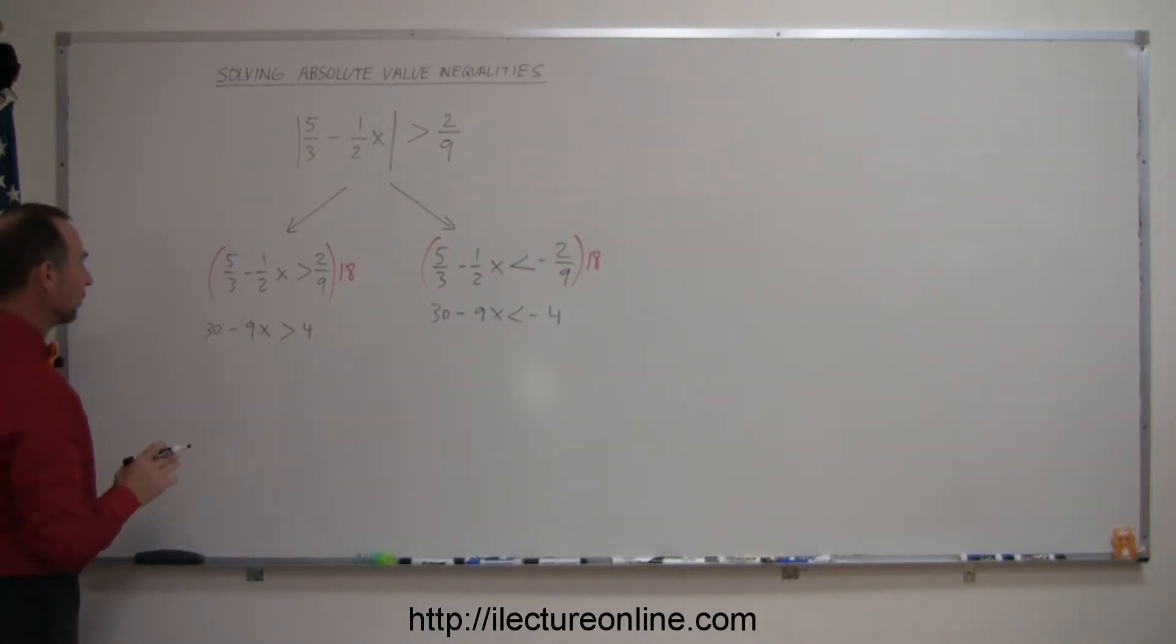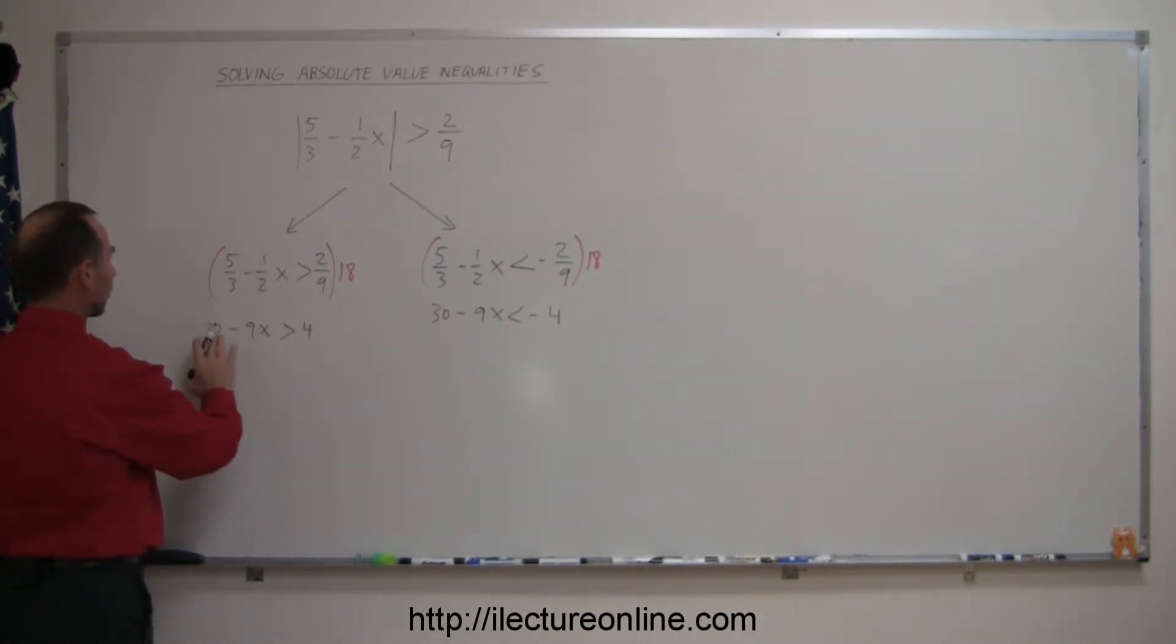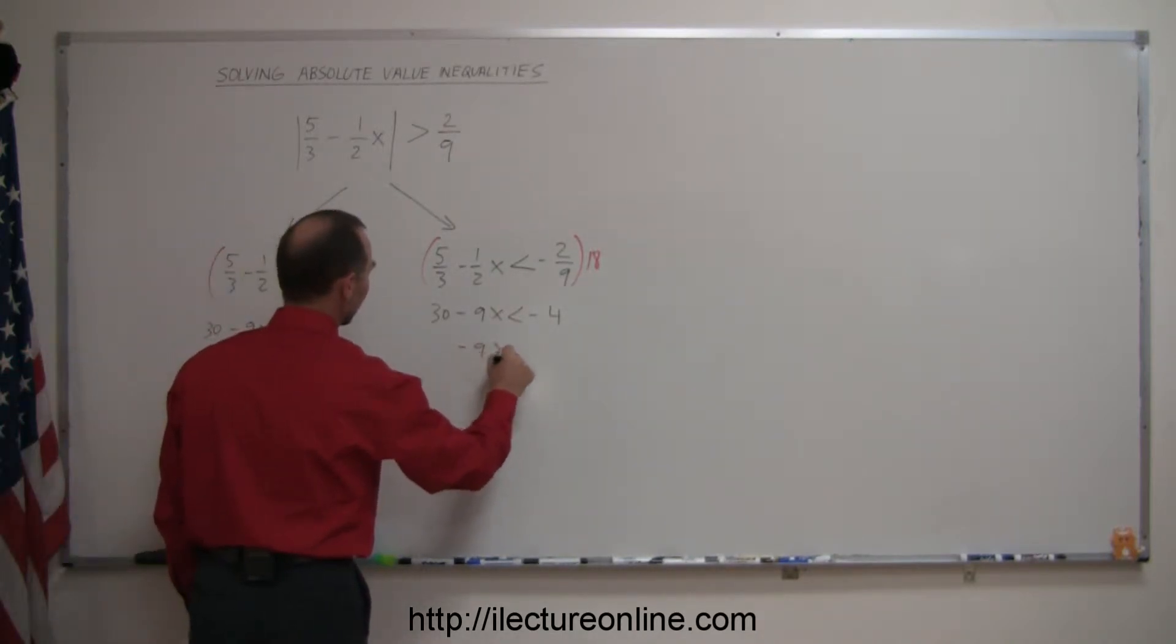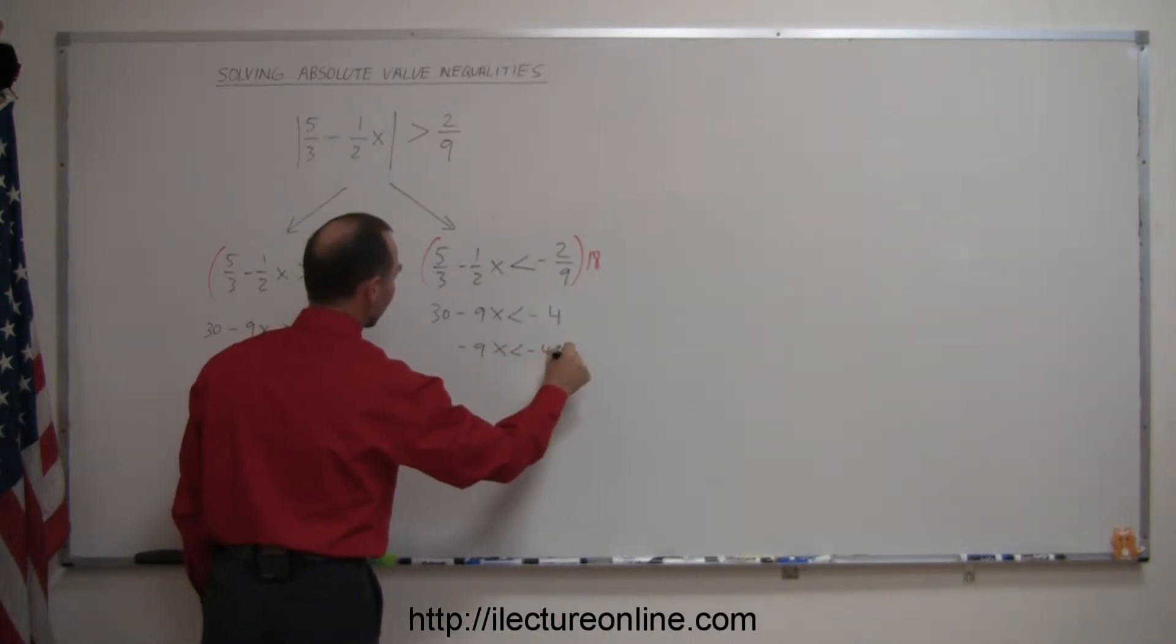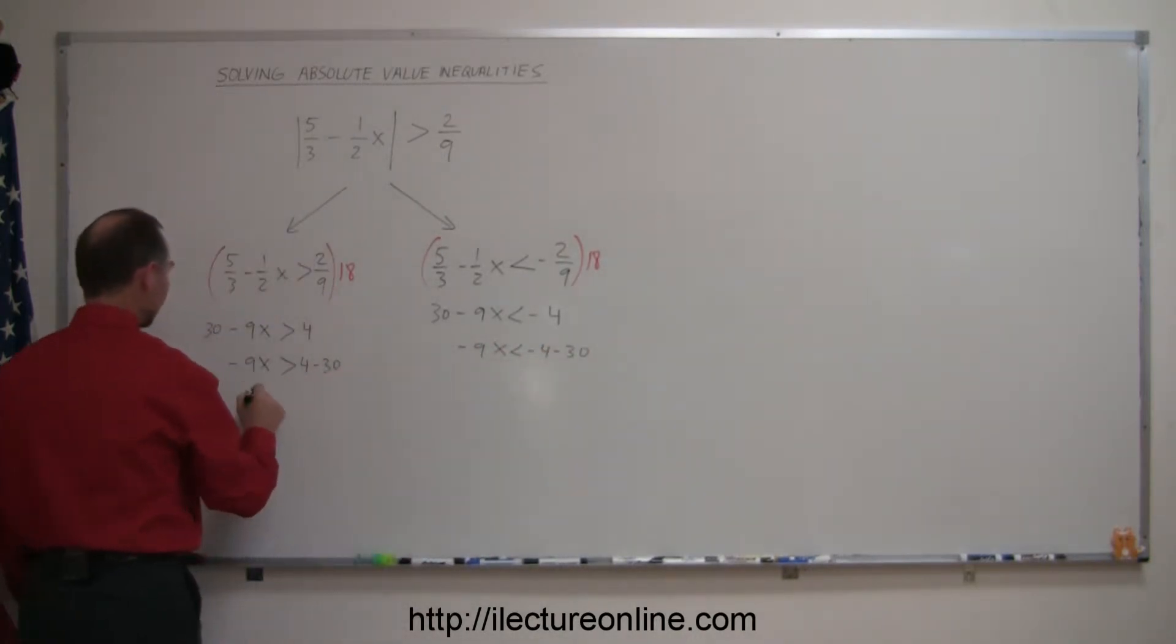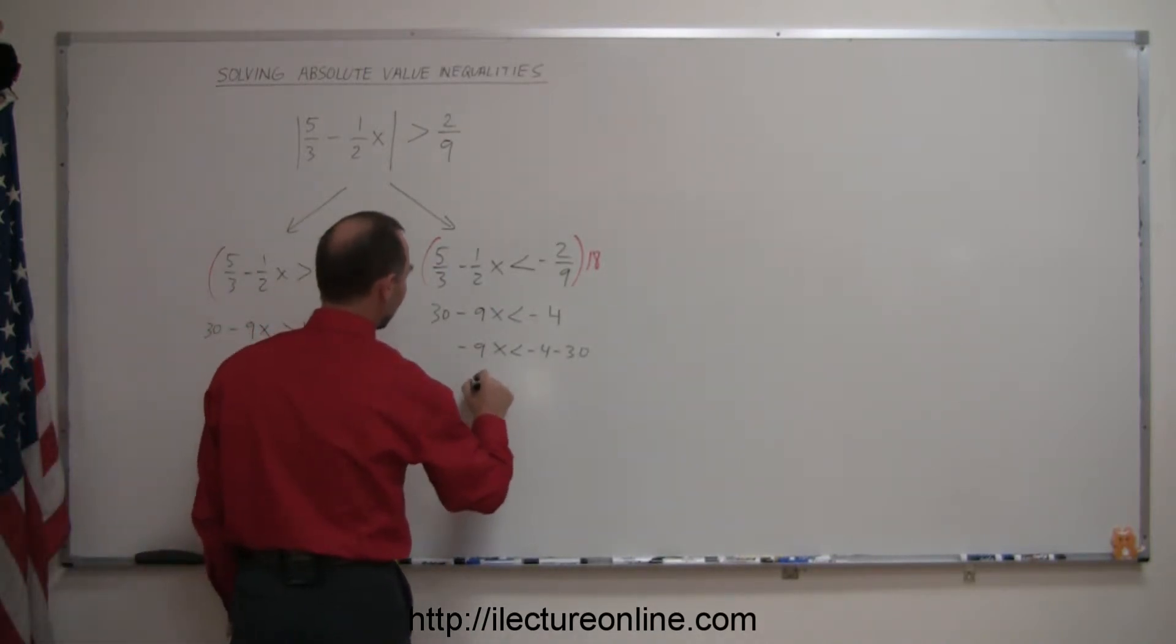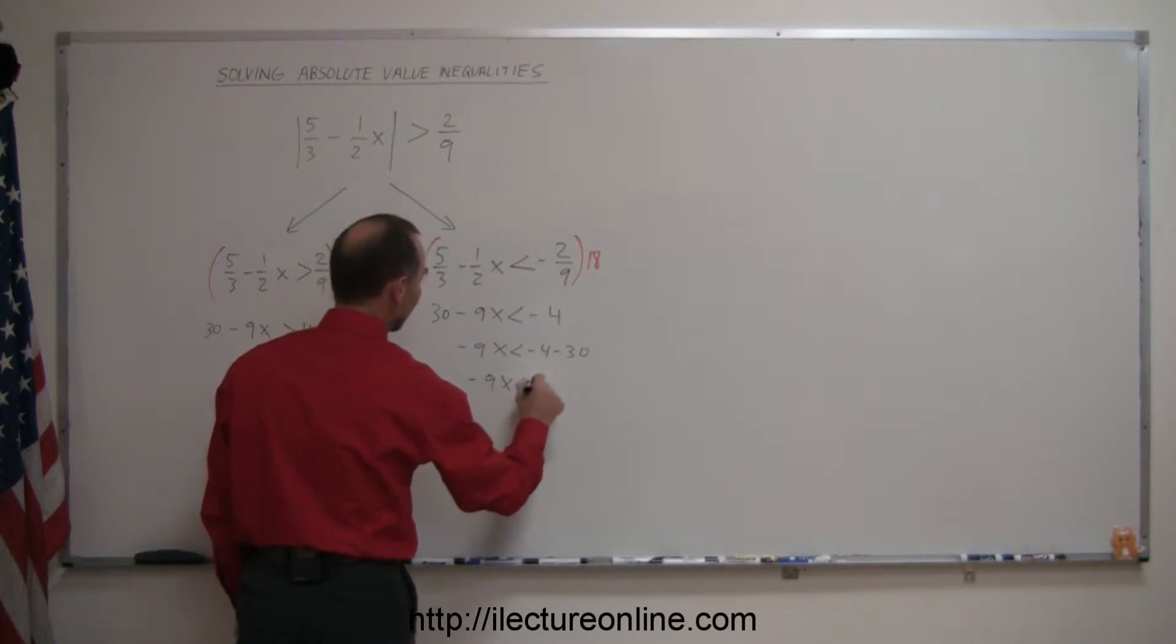So the next thing we want to solve for x. We're going to move the 30 over to the other side, so we end up with minus 9x is greater than 4 minus 30, and here we get minus 9x is less than minus 4 minus 30. Combining like terms, we get minus 9x is greater than minus 26, and here we get minus 9x is less than minus 34.